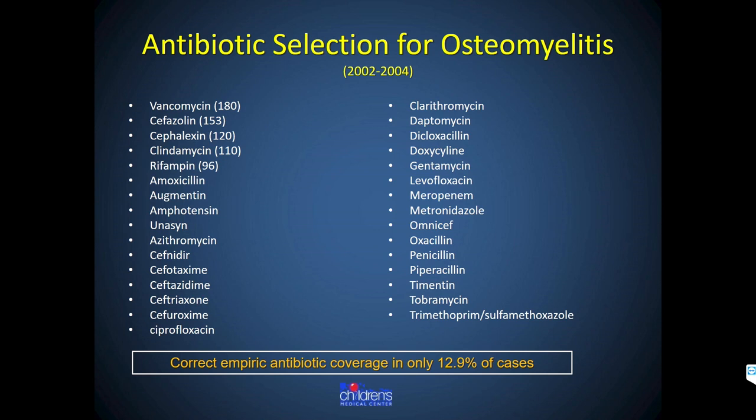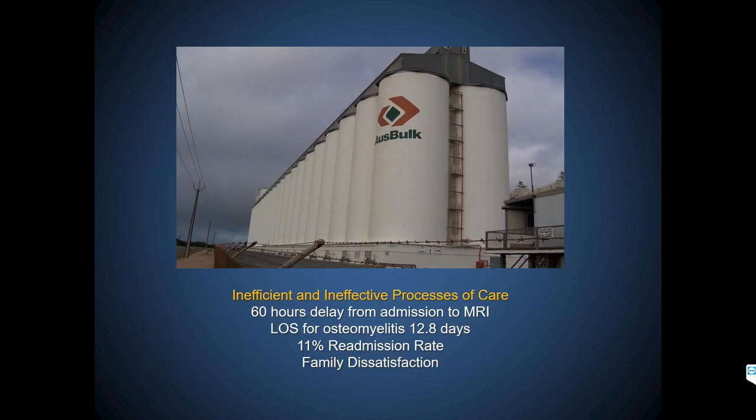There were no cases of clindamycin resistance at that time, and we had enough MRSA to need to cover it empirically. The drug of choice for all types of musculoskeletal infection, particularly osteomyelitis, should have been clindamycin, but we were using it empirically only 12.9% of the time. By the time we finally figured it out, three or four days into hospitalization, we were probably on the wrong drug. Vancomycin is not a good drug for osteomyelitis — it's too large a molecule to get into bone and doesn't kill intracellular organisms.